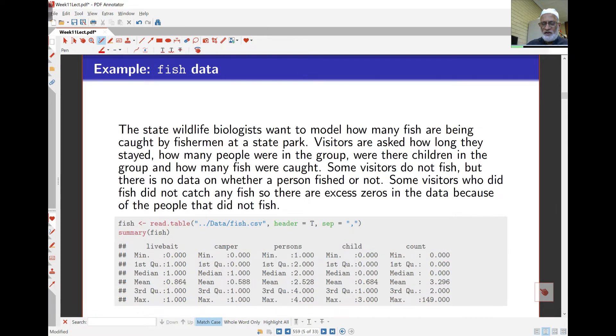Example here is the state wildlife biologists want to model how many fish are being caught by fishermen at the state park. Visitors are asked how long they stayed, how many people were in the group, how many children were in the group, and how many fish were caught. Here's the data. Live bait was used or not, camper was taken or not, how many persons were in the group, how many children, and how many fish they caught. Looking at the fish here, up to the third quartile is only two, but the maximum is 149. So you expect this data to be very, very right skewed.